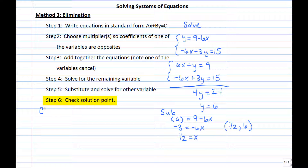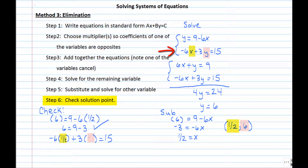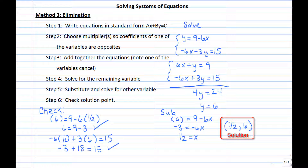To verify, we check both original equations. In the first equation, y equals 9 minus 6 times x: plugging in 6 for y and one-half for x gives 6 equals 9 minus 3, which is 6 — checks out. In the second equation, negative 6 times x plus 3 times y equals 15: substituting one-half for x and 6 for y gives negative 3 plus 18 equals 15, which is clearly true. So one-half, 6 is confirmed as the solution.